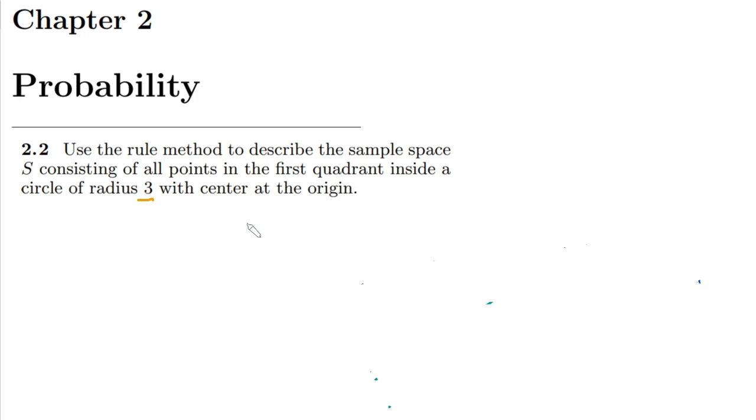So we have to use the rule method here to find all the points which are inside the circle of radius 3 and also in the first quadrant of that circle.